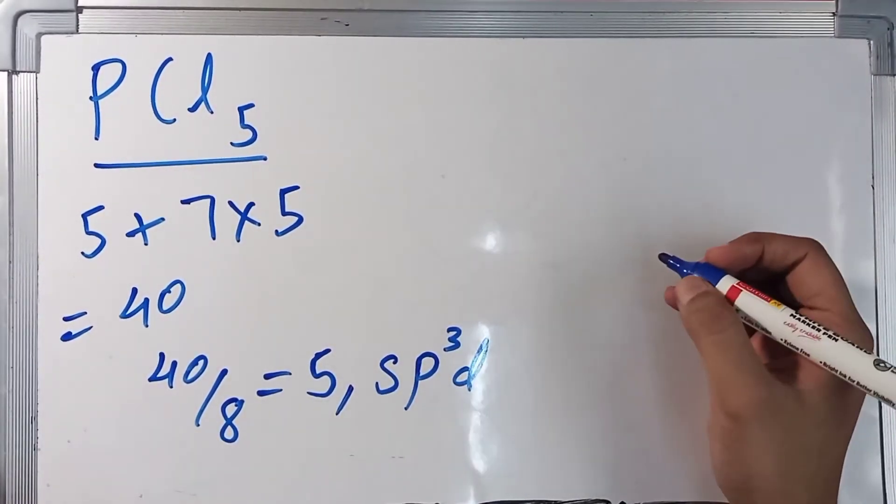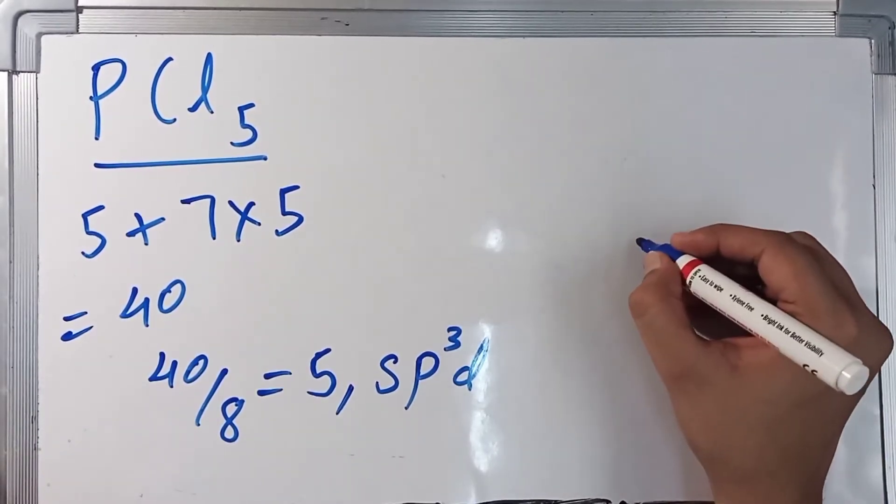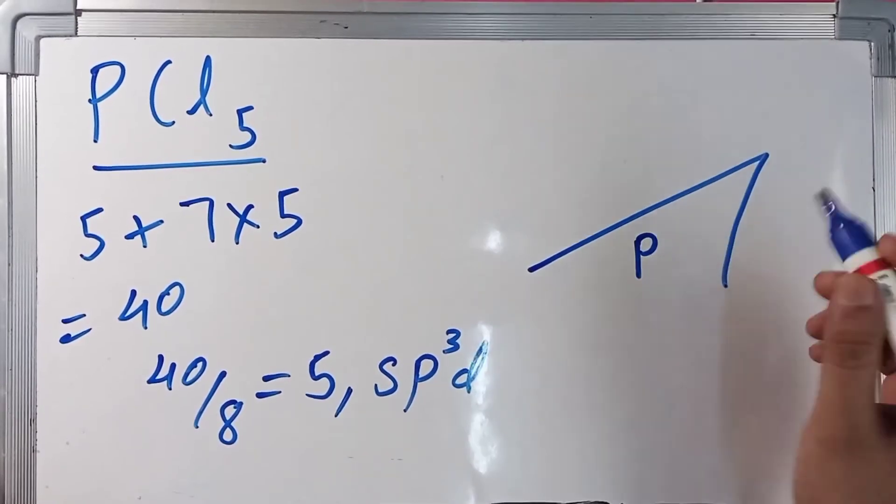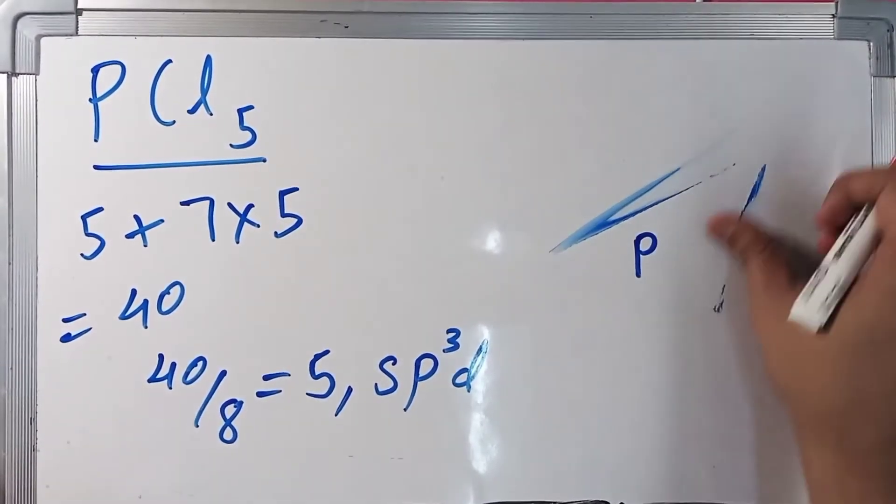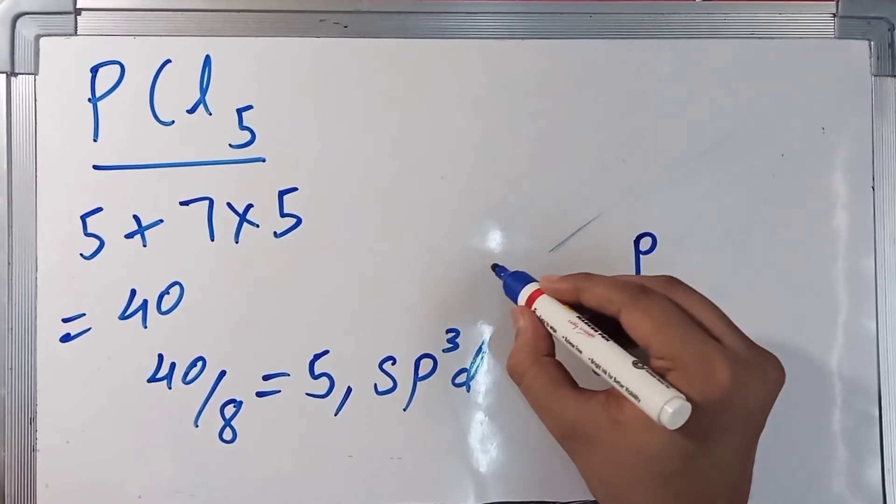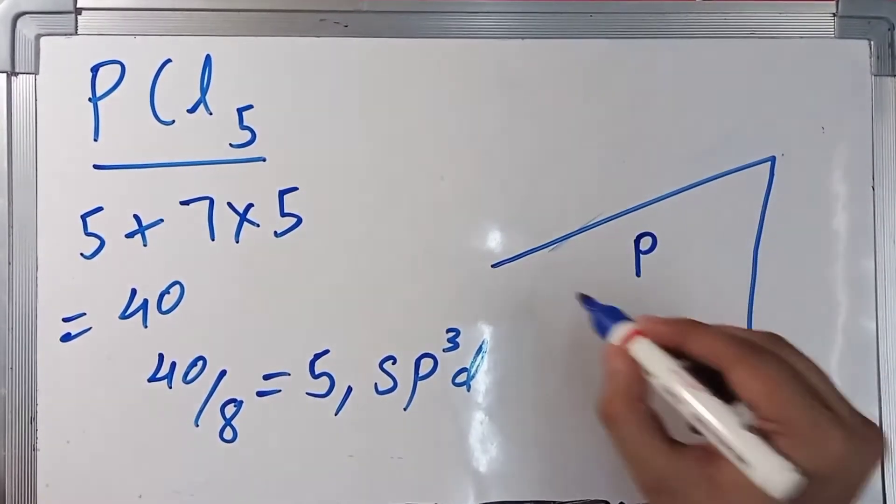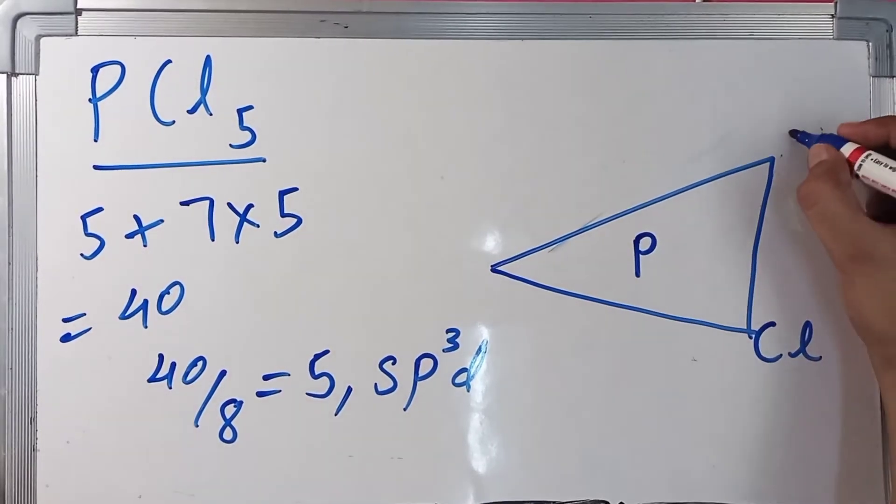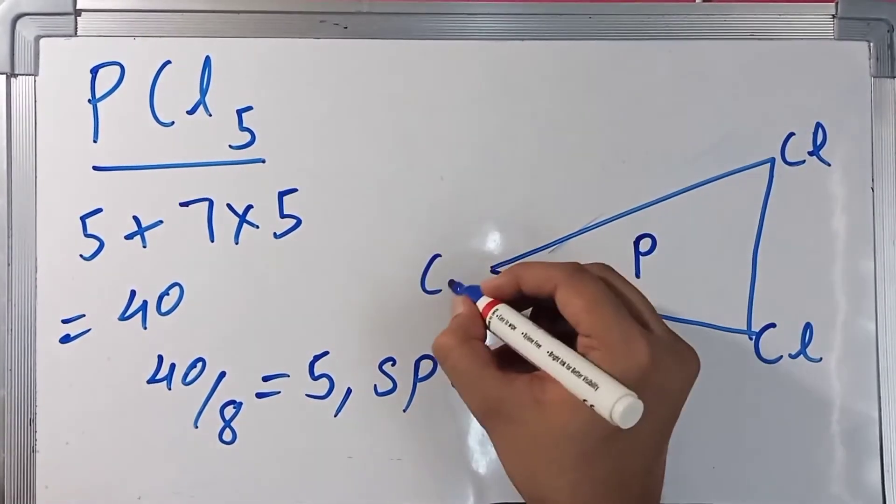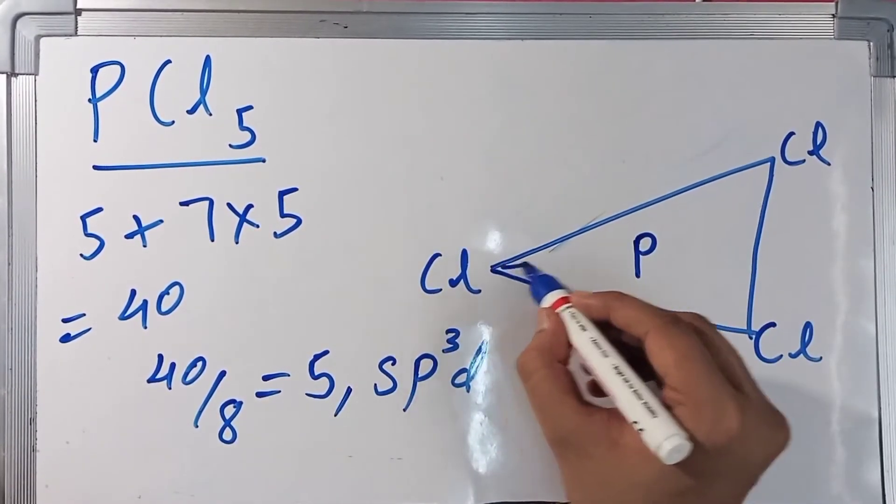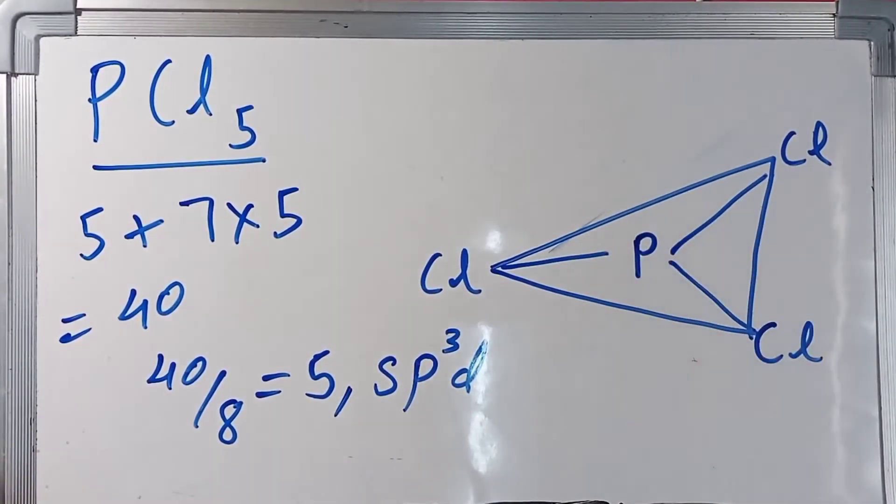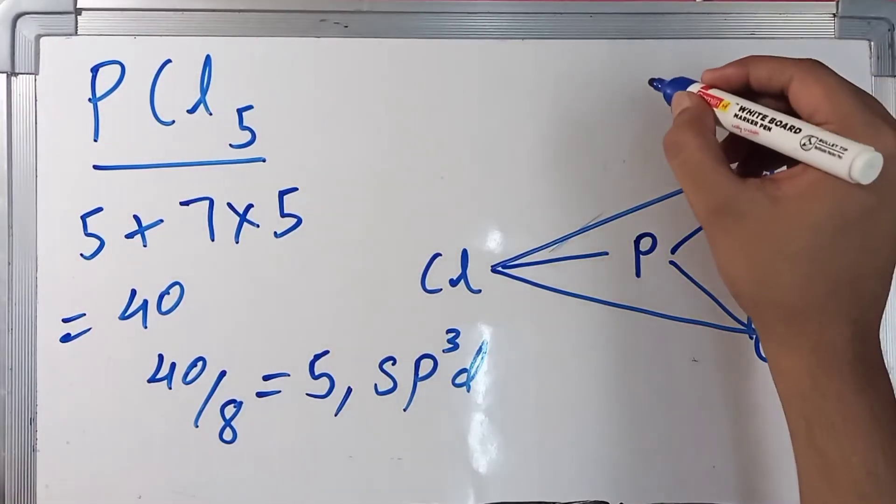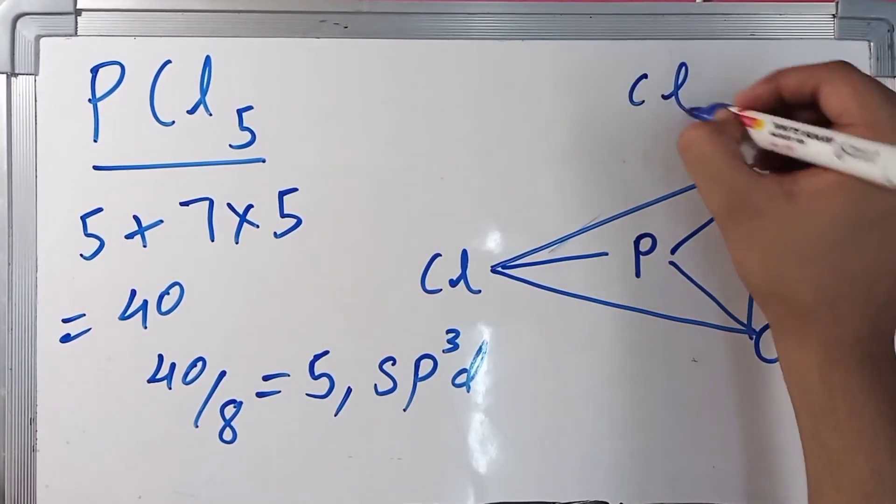This is phosphorus. The corners are represented by chlorine - chlorine, chlorine, and chlorine, the three bonds. And the fourth chlorine here and fifth chlorine here.